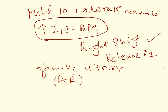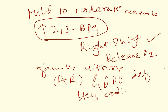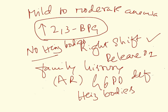Comparing pyruvate kinase deficiency with glucose-6-phosphate dehydrogenase (G6PD) deficiency: G6PD deficiency leads to severe hemolytic anemia and produces Heinz bodies — precipitated hemoglobin molecules in the red blood cell. Whereas in pyruvate kinase deficiency, you do not see Heinz bodies.